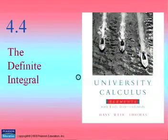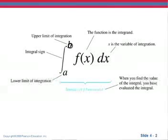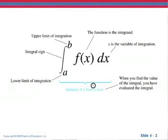In this section we're going to look at the definite integral. We looked at an indefinite integral in a previous recording. We have this integral sign with the lower limit of integration and the upper limit of integration. A lot of this looks the same except for these two limits. We'll find the integral of f from a to b, and when you find the value of the integral, you have actually evaluated the integral. How do we evaluate integrals?